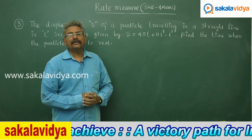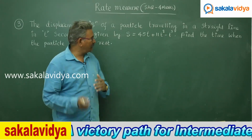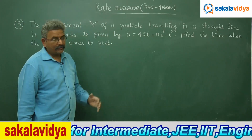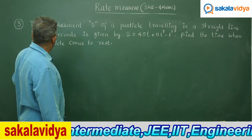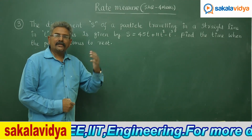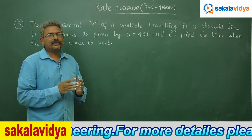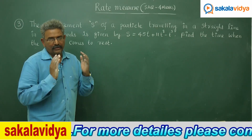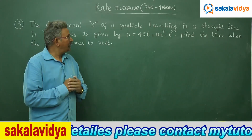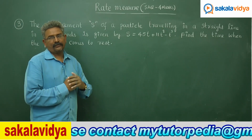When the particle comes to rest, the final velocity becomes 0. We need to find out at what instant the final velocity becomes 0. That means we need to find out dS/dt, which is the velocity, and equate it to 0. Then we have to find out t.